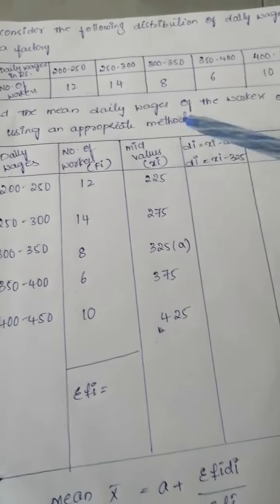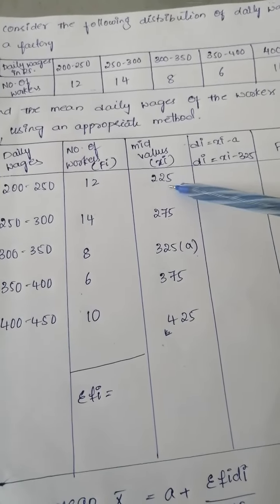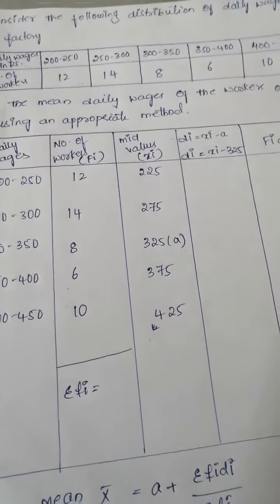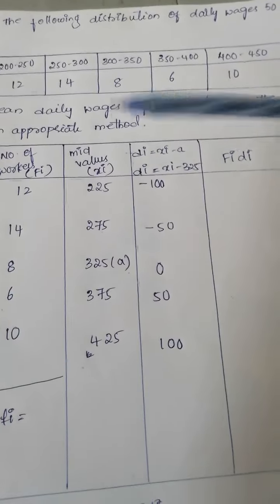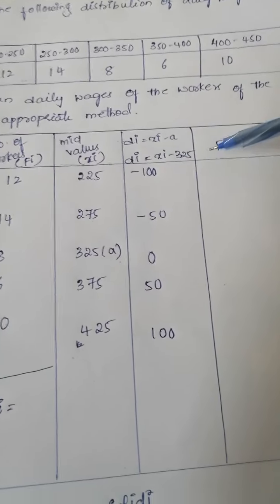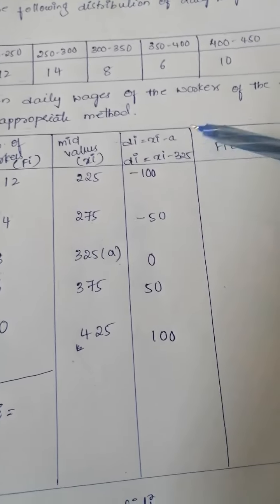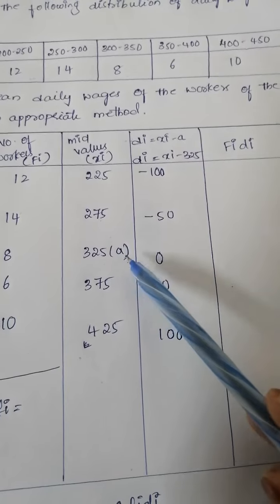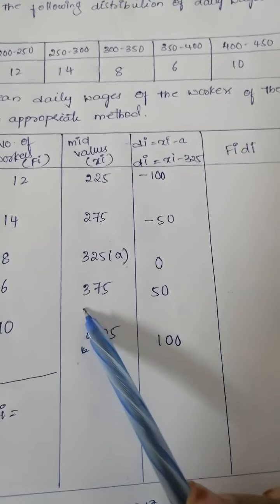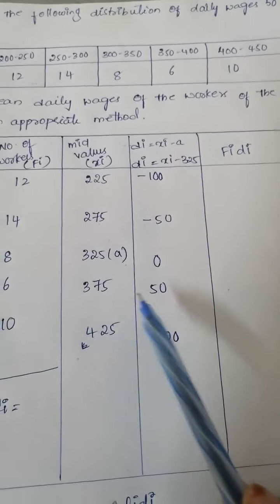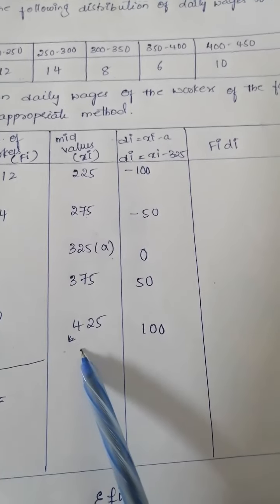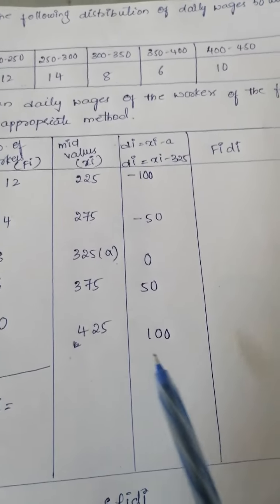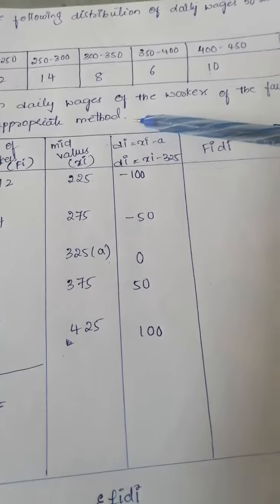First of all, 225 minus 325, how much? Minus 100. 275 minus 325, minus 50. 325 minus 325, zero. 375 minus 325, plus 50. 425 minus 325, plus 100. These are the Di values.